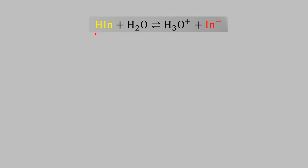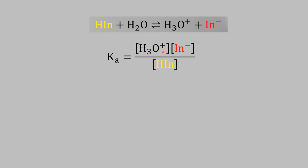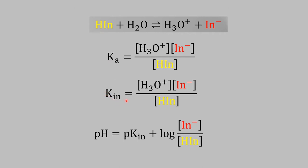From the equilibrium of the weak acid shown here, we can derive the equilibrium constant Ka. Ka equals the hydronium ion concentration times the conjugate base concentration divided by the weak acid concentration. This is the equilibrium of the indicator. We change the K value to K-indicator, which equals the same thing. If we take the p-function and rearrange this equation, we get: pH = pK-indicator + log([base] / [acid]). This is similar to the equation for a buffer solution.